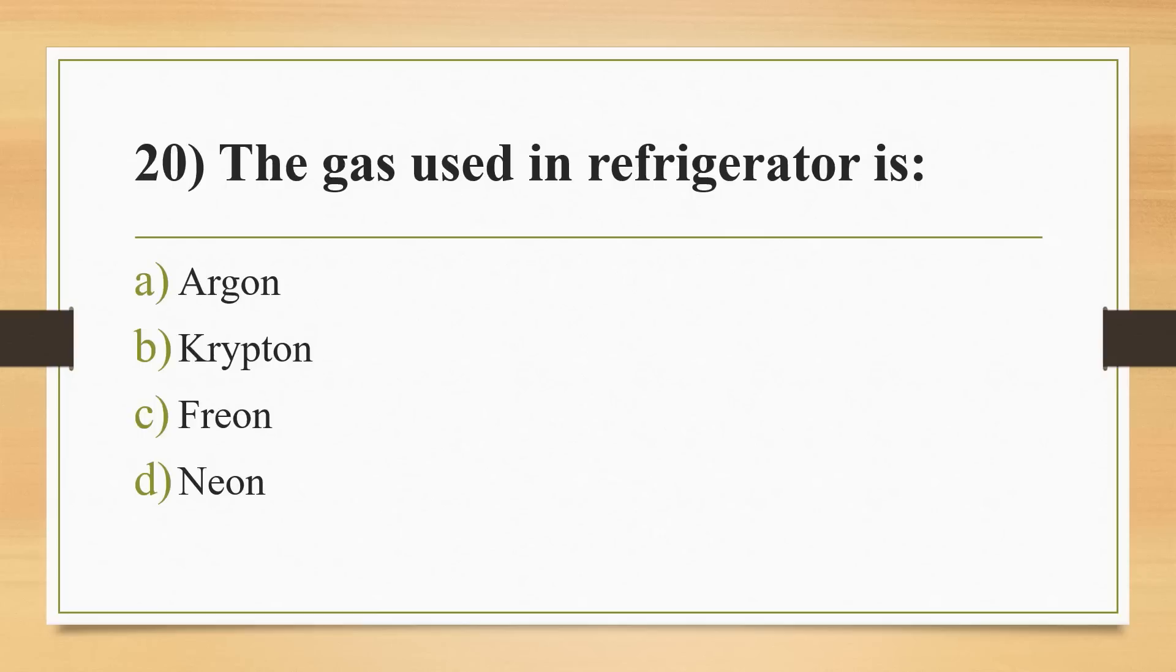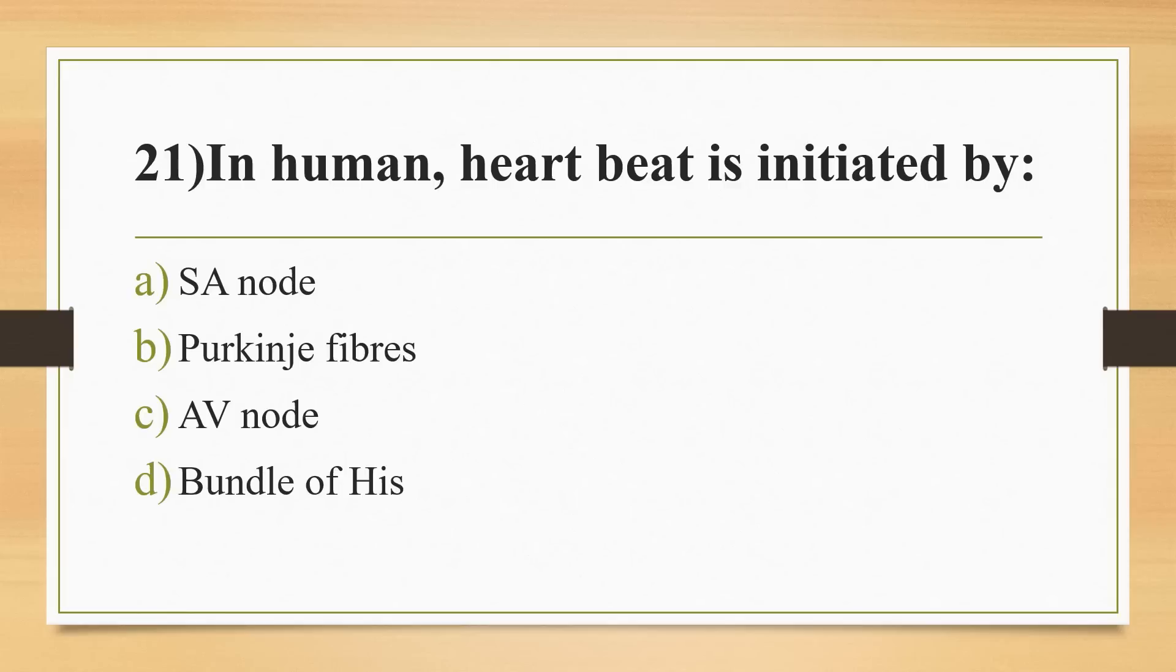Twentieth question: the gas used in refrigerators is? Options: argon, krypton, freon, or neon. Answer is Option C, freon. Twenty-first question: in human, heartbeat is initiated by? Options: SA node, Purkinje fibers, AV node, or bundle of His. Answer is Option A, SA node.